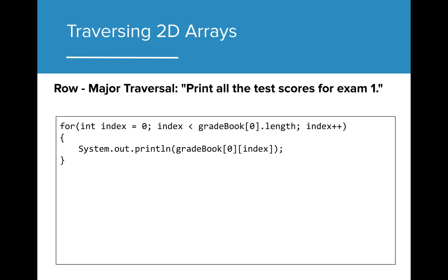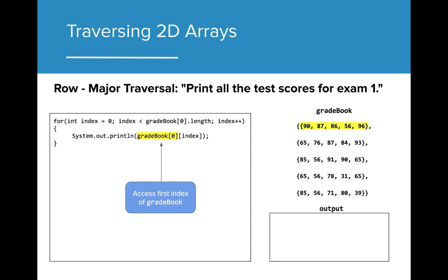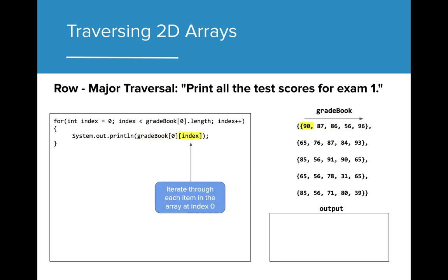Let's first look at row major traversal for printing all test scores for a specific exam. Because we are only traversing an individual array in the 2D array, this traversal looks very similar to the 1D traversals we have been doing. The for loop is iterating from the value 0 to the last value of the array at position 0 in the 2D array. We only want to access gradebook[0], which is the first array in the gradebook, to print all values for the first exam for all students. We iterate through the array by accessing the individual indices within the array at index 0, and each iteration prints one value until the first array has printed.